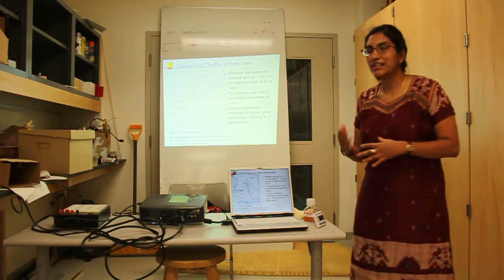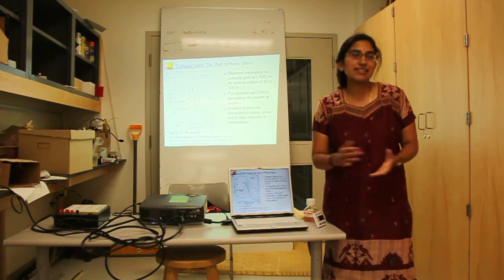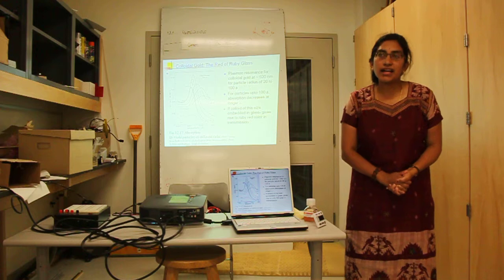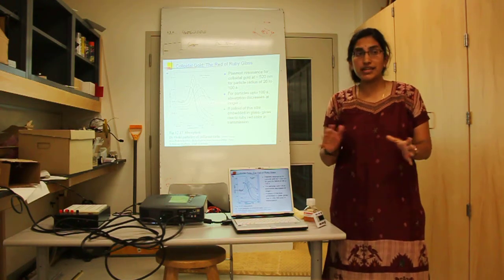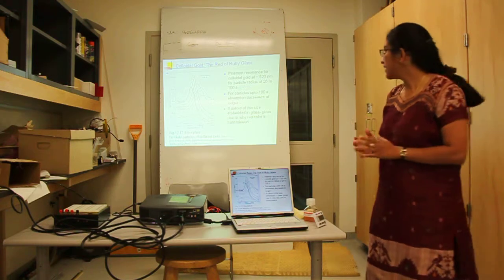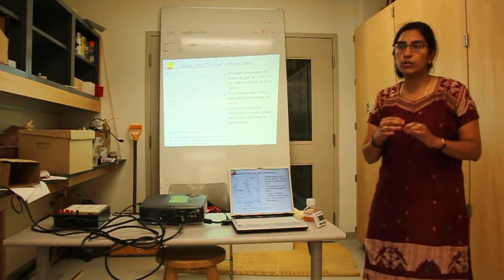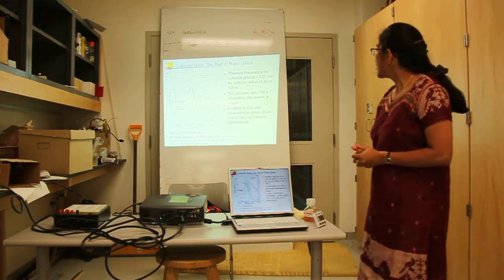So, now we come back to the beginning where I asked you, do you know why I have a ruby glass? Well, actually, ruby glass is one of the earliest applications of nanotechnology. Because what gives ruby glass its characteristic red color is the presence of gold nanoparticles within the matrix of glass.